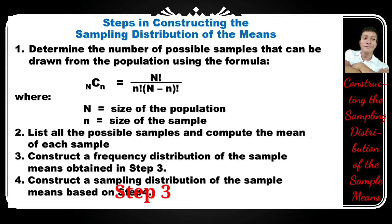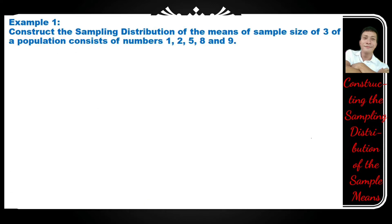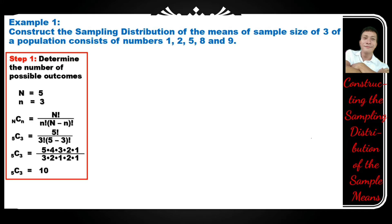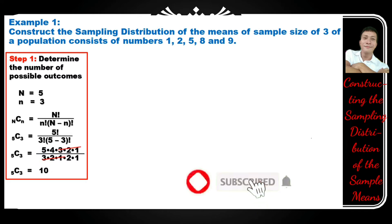Step 4: construct a sampling distribution of the sample means based on step 3. For example one, construct the sampling distribution of the means of sample size 3 of a population consisting of numbers 1, 2, 5, 8, and 9. In step 1, determine the number of possible outcomes. Our population size N is 5 and sample size n is 3. Substituting into the formula: 5 factorial over 3 factorial times 2 factorial. This simplifies to 5 times 2 equals 10. So we are expecting 10 possible outcomes.